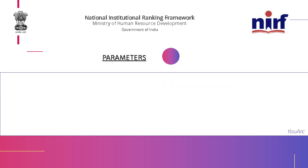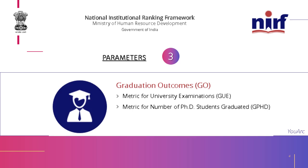The third parameter is Graduation Outcome, which is also an important criterion that students should consider when selecting a college. This includes university examination results and the number of PhD students graduated, all of which enhance the overall quality of a college.